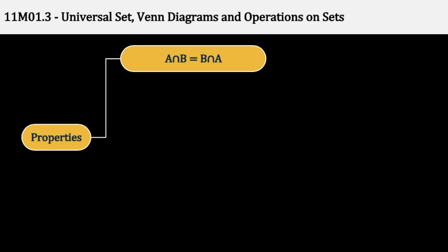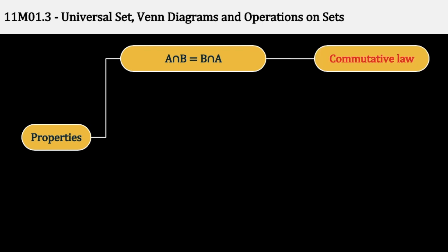आइए Intersection की कुछ properties देखते हैं. A Intersection B is equal to B Intersection A — जैसे कि Union की case में था, इसको Commutative Law बोलते हैं. A Intersection B gives us common elements between A and B, and B Intersection A gives us between B and A, which is the same thing.